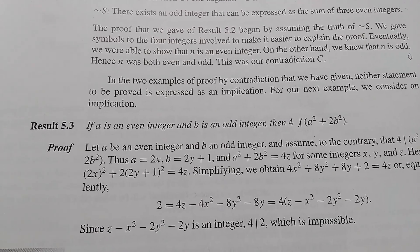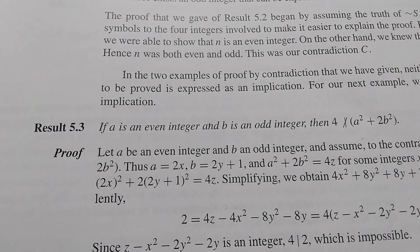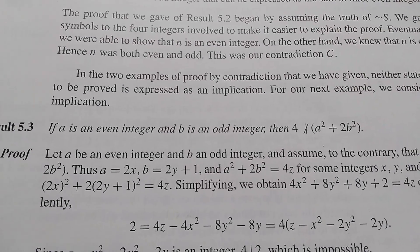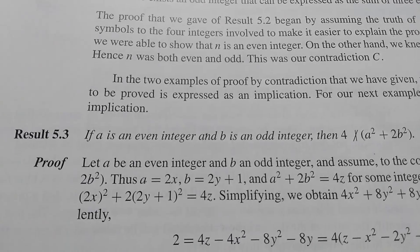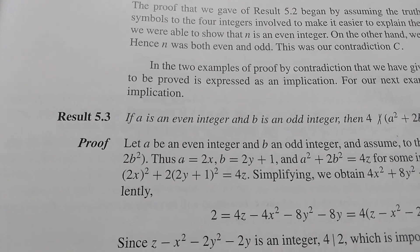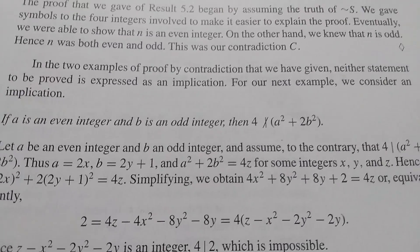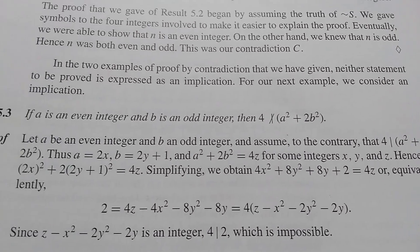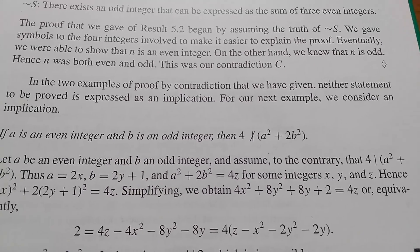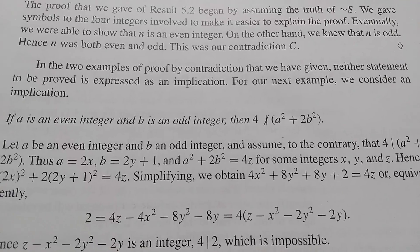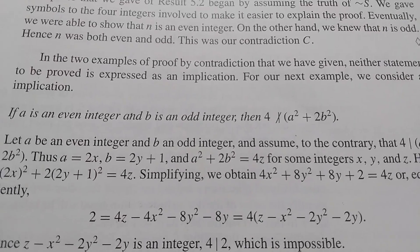This is a sample proof by contradiction. Let's look at it, at least at the beginning. If a is an even integer and b is an odd integer, then 4 does not divide the quantity a squared plus 2b squared. So notice how the author starts the proof. He starts by assuming that a is an even integer and b is an odd integer. And then he says, and assume, to the contrary, that 4 does divide the quantity a squared plus 2b squared. So the language is very, very elegant and it's very clear what they're doing in their proof. They're using a proof by contradiction because they say assume to the contrary.